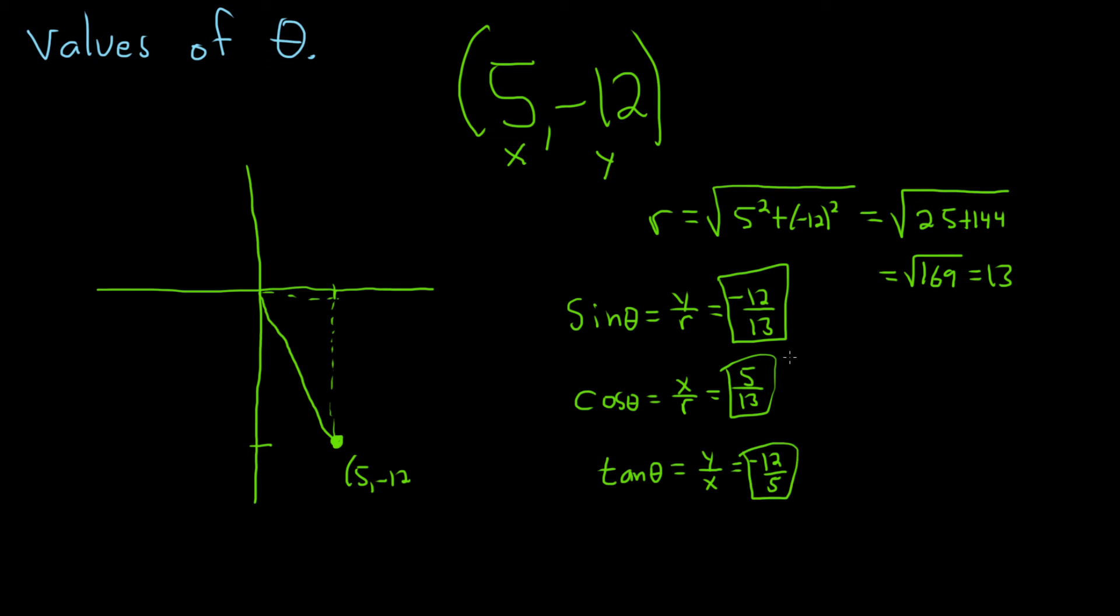And for the other three, all we have to do is flip them because they're the reciprocals. So the cosecant of theta is the reciprocal of sine. That's negative 13 over 12. So you just flip it.